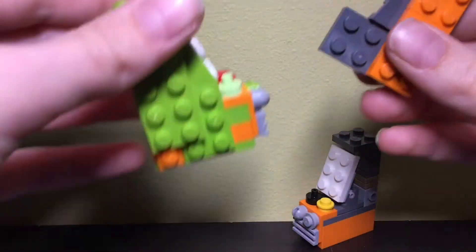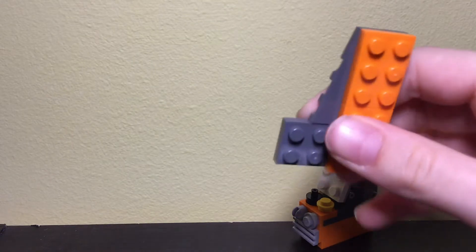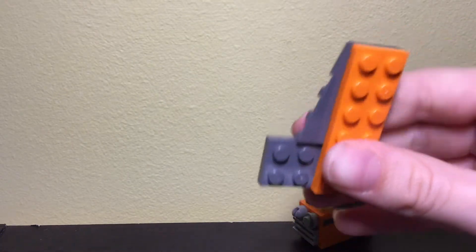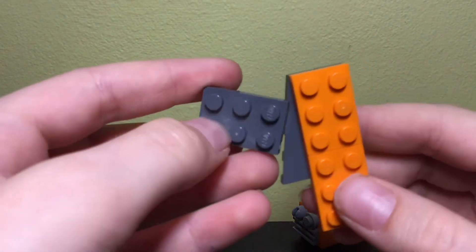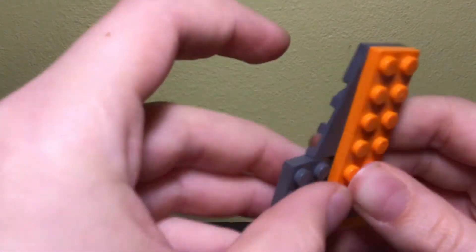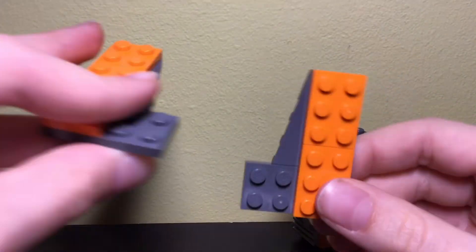If you want to make the previous version without the extension, substitute the 2x3 tile with a 2x2 plate. Once you have two of these sides made...